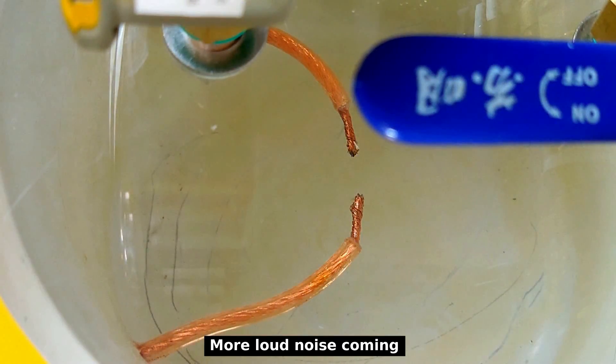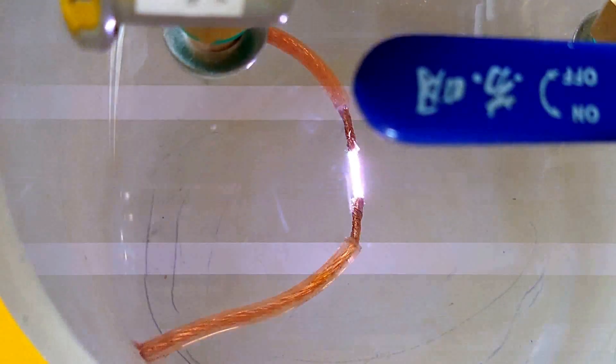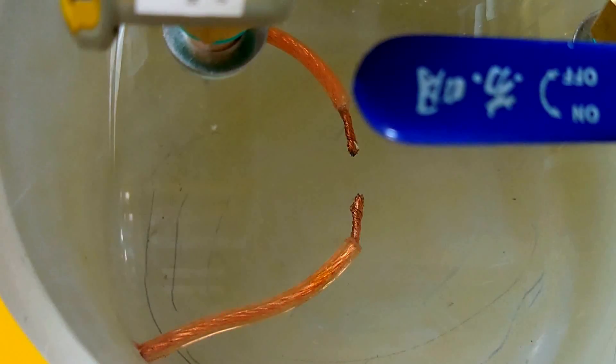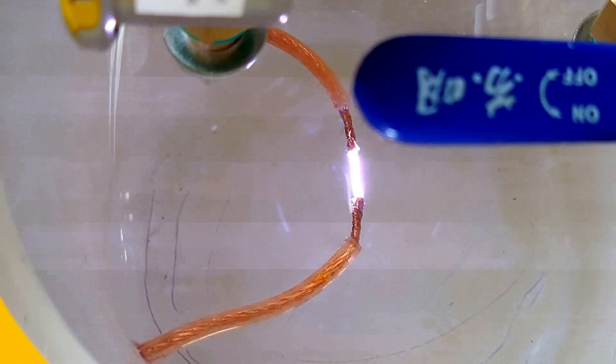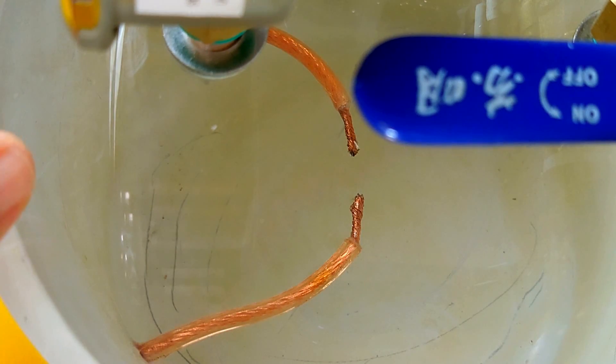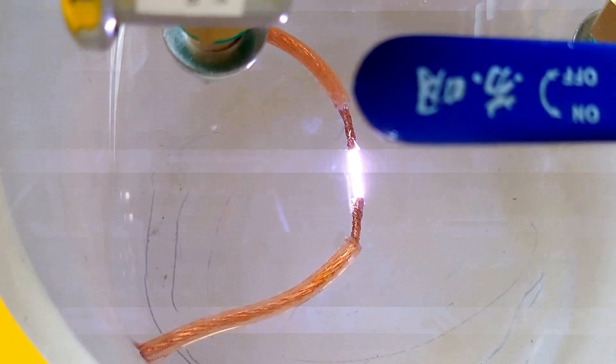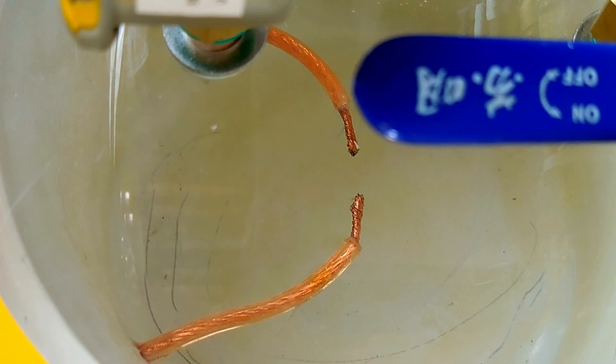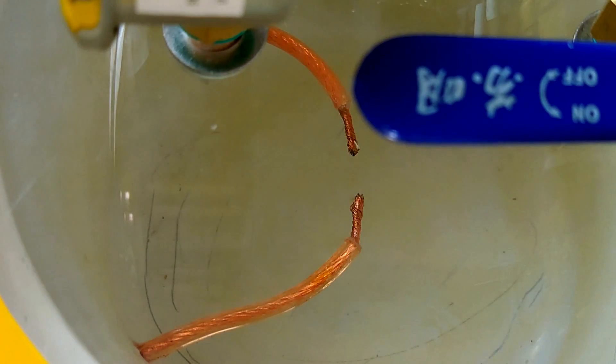You can see the arc is different between the two wires. Rather than branching out like it did with the oxygen in the air, it goes in a straight line from side to side and it also has a pinkish or reddish glow to it. And it sounds a little different too as well.